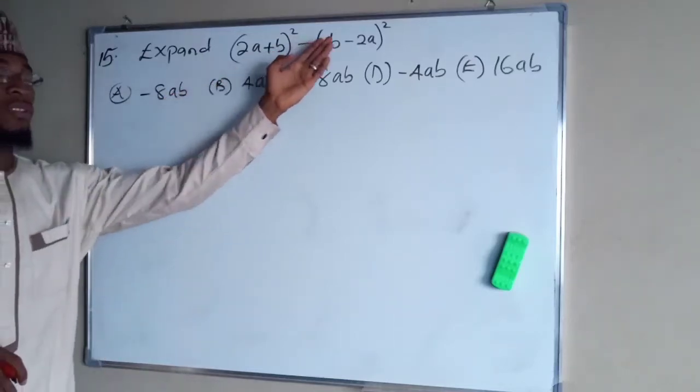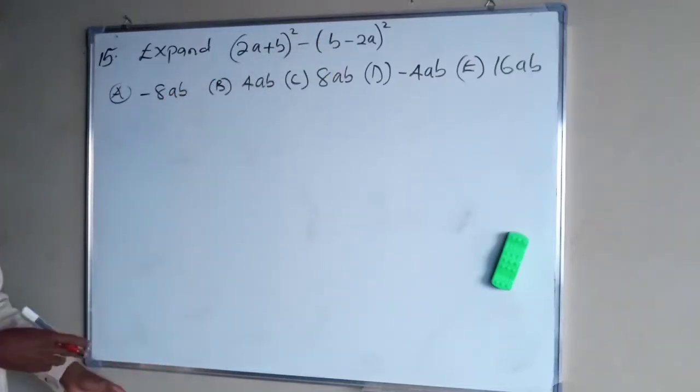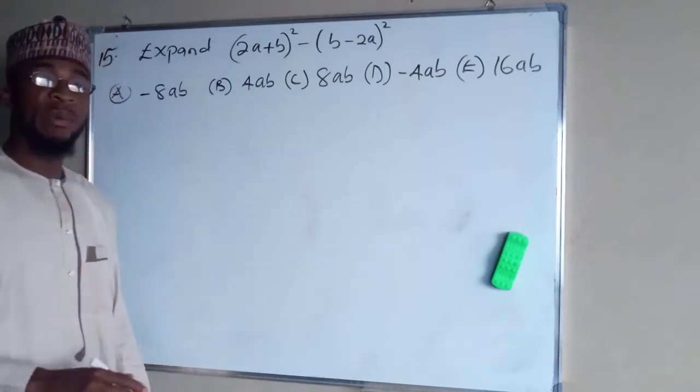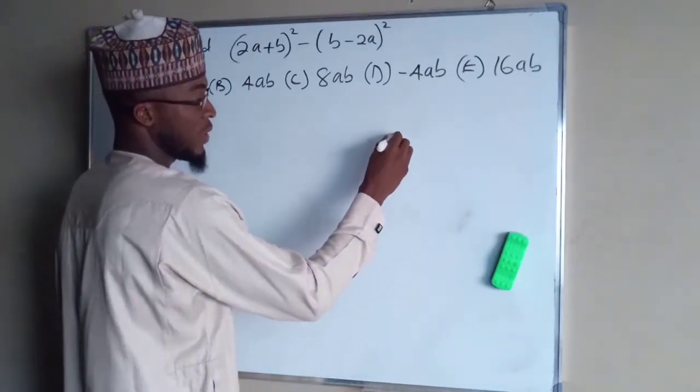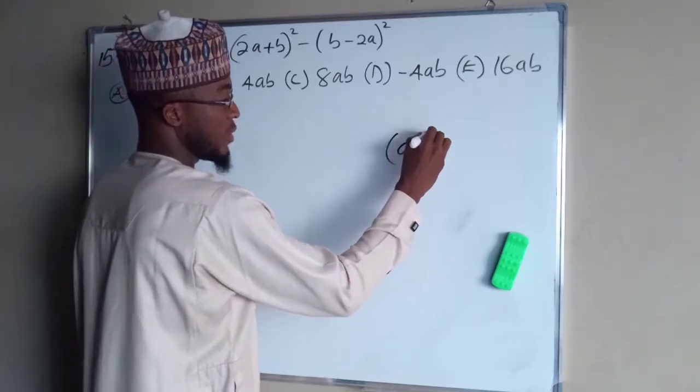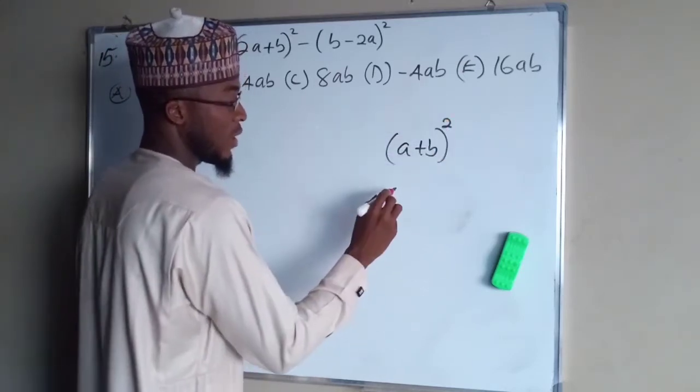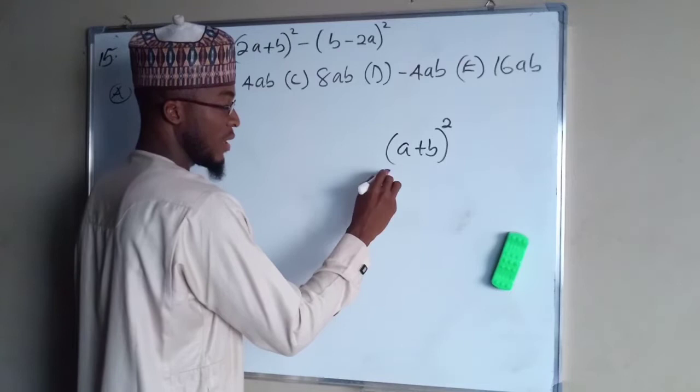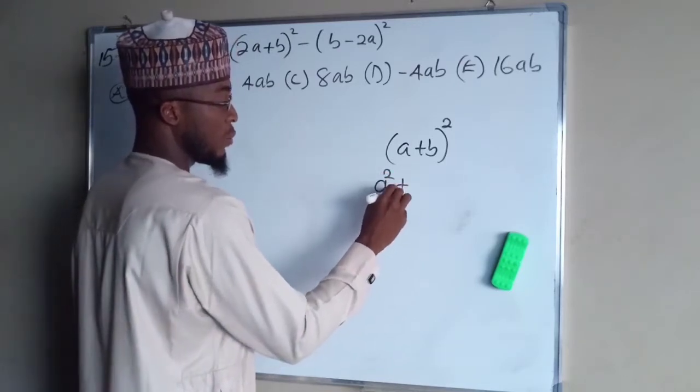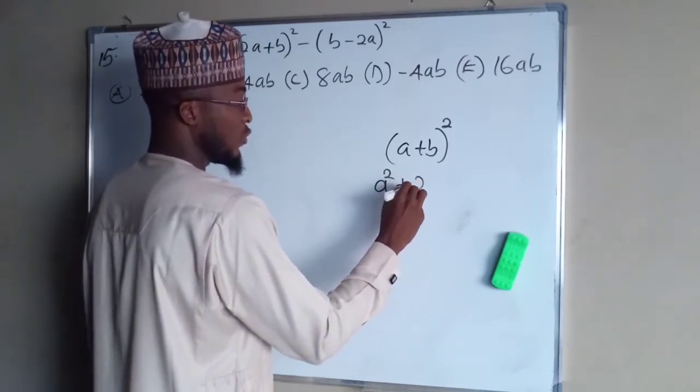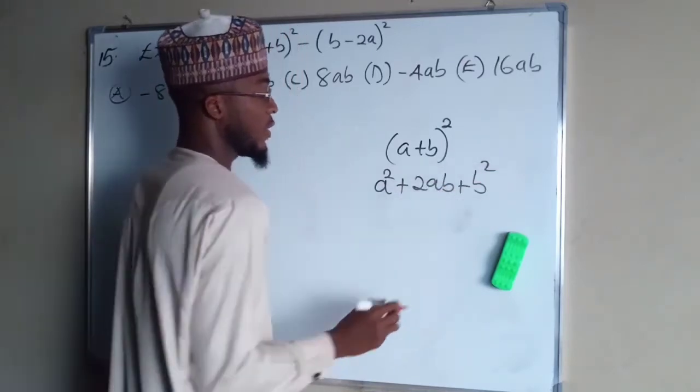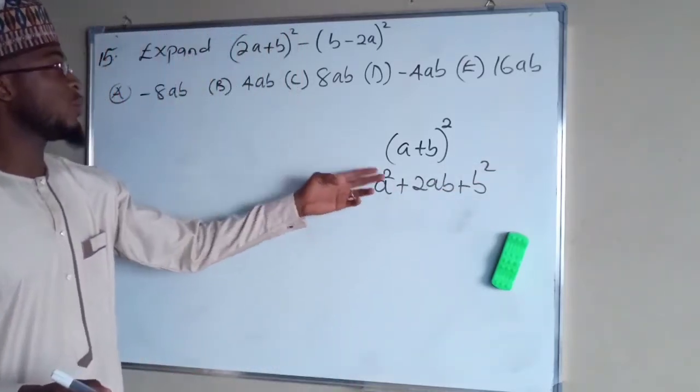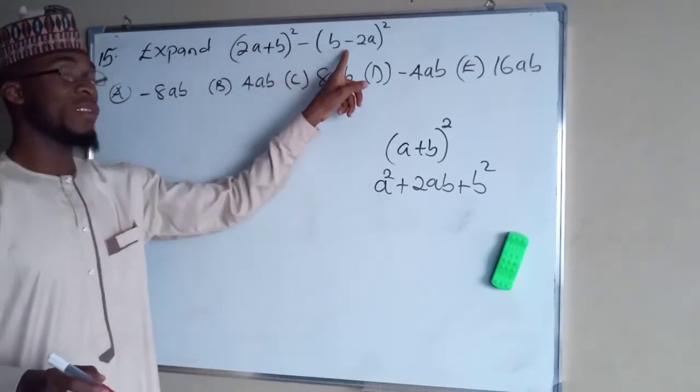It says expand these quantities. It is a law in binomial expansion using Pascal triangle that if you have a plus b to the power of 2, this is the same thing as a squared plus 2ab plus b squared. So you can apply this law onto each one of these quantities.